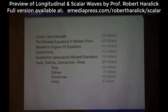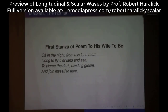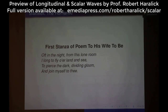I've listed on the right-hand side the number of slides I have on each of these topics. Maxwell is going to be an interesting biographical sketch that has some things in it that I didn't know, and perhaps you didn't know either. He was a romantic. There was a series of close to 50 poems that have been published which he wrote. This is the first stanza of a poem he wrote to his wife-to-be, who he was at that time separated from: 'Often the night from this lone room, I longed to fly over the land and sea, to pierce the dark dividing gloom and join myself to thee.'